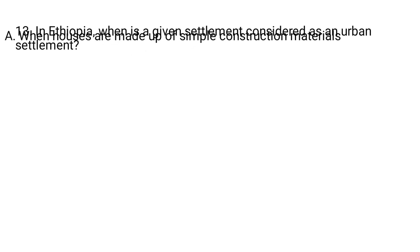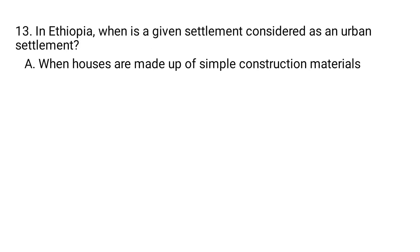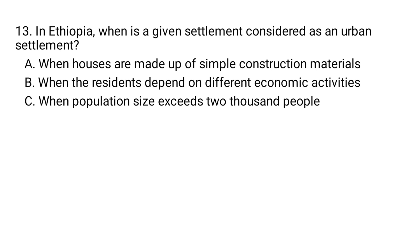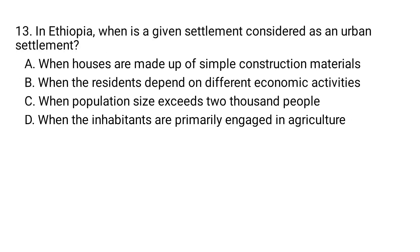Question number 13. In Ethiopia, when is a given settlement considered an urban settlement? A. When houses are made of simple constructional materials. B. When residents depend on different economic activities. C. When population size exceeds 2,000 people. D. When inhabitants are primarily engaged in agriculture. The correct answer is C — when the population size exceeds 2,000 people, a settlement in Ethiopia is considered urban.